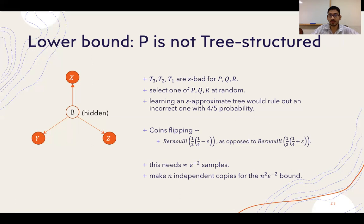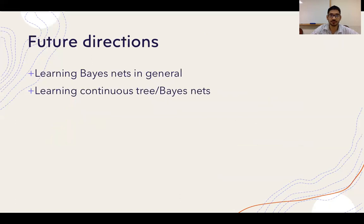By making n independent copies of this construction, we obtain the desired n² · epsilon^{-2} lower bound for n variables.